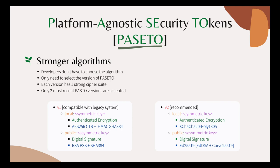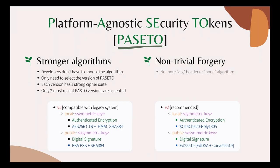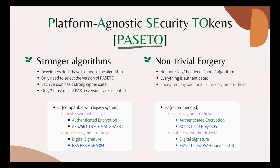Now with the design of PASETO, token forgery is no longer trivial. Because the algorithm header doesn't exist anymore, the attacker cannot set it to "none" or force the server to use the algorithm it chose in that header. Everything in the token is also authenticated with AEAD, so it's not possible to tamper with. Moreover, if you use a local symmetric key algorithm, the payload is now encrypted, not just encoded. So it's not possible for hackers to read or change the data stored in the token without knowing the server's secret key.